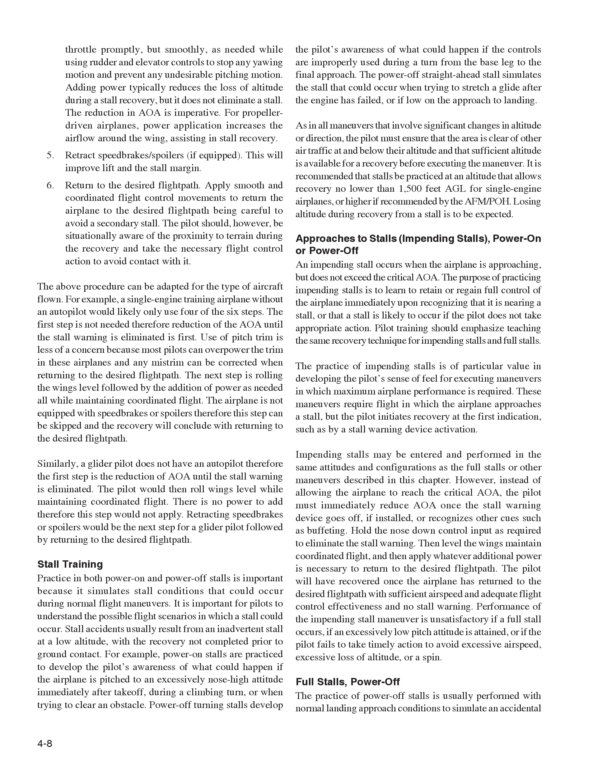Impending stalls may be entered and performed in the same attitudes and configurations as full stalls or other maneuvers. Instead of allowing the airplane to reach the critical AOA, the pilot must immediately reduce AOA once the stall warning device activates, or when other cues such as buffeting are recognized. Hold the nose-down control input as required to eliminate the stall warning, then level the wings, maintain coordinated flight, and apply whatever additional power is necessary to return to the desired flight path. Performance of the impending stall maneuver is unsatisfactory if a full stall occurs, if an excessively low pitch attitude is attained, or if the pilot fails to take timely action to avoid excessive airspeed, excessive loss of altitude, or a spin.